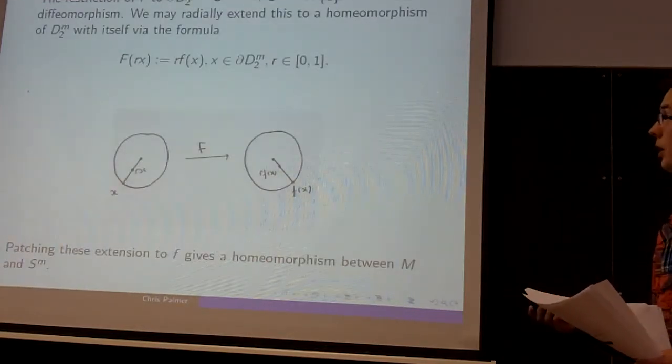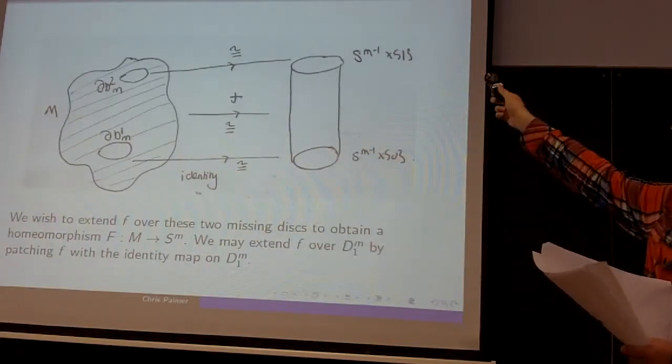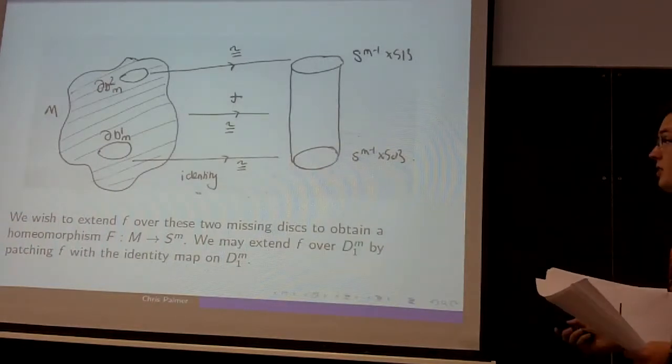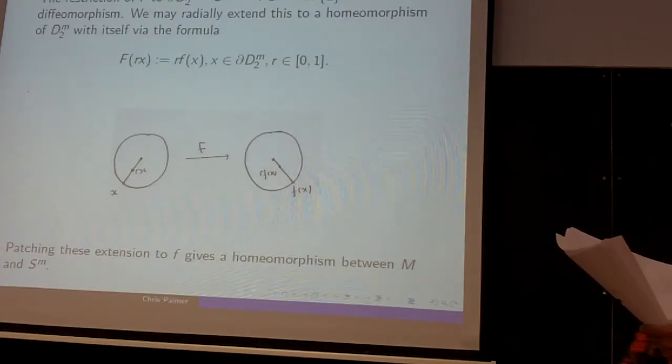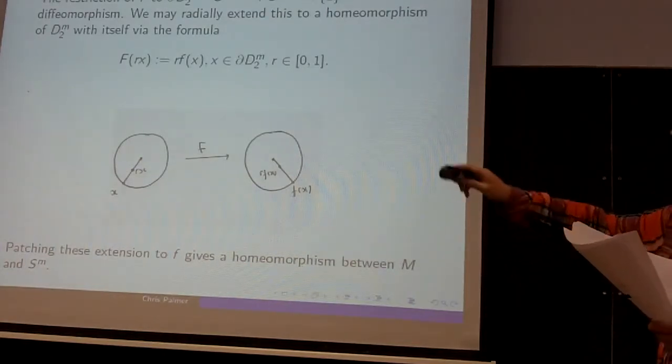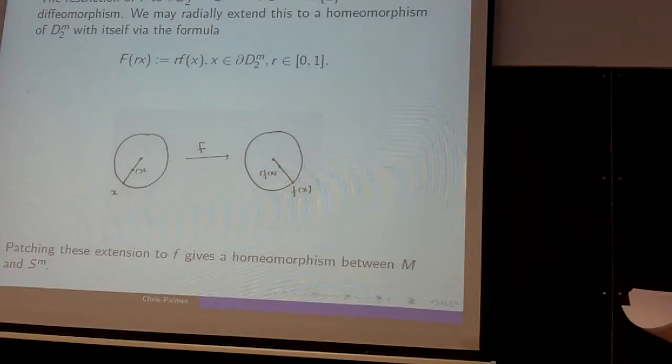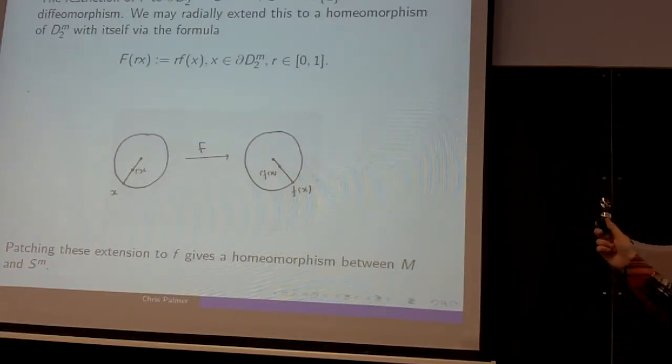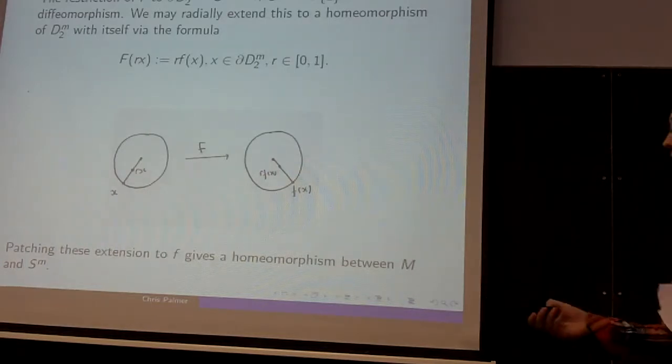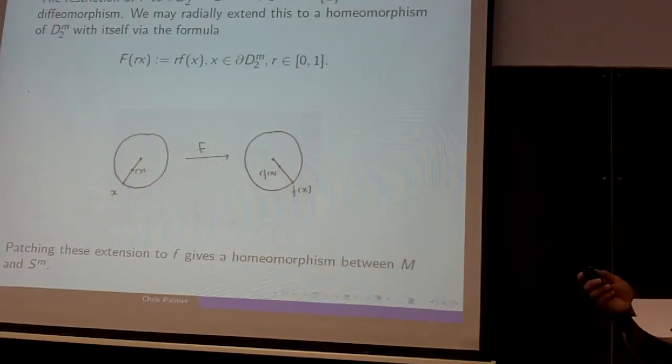For the second one, we have to work a bit harder. When we restrict to the boundary of the second disc, we know that it's a diffeomorphism onto the top part of the boundary, but it's not necessarily the identity. The idea is you can use this radial extension, so we know how it's defined on the boundary. Each point on this closed end disc lies in some unique line connecting the boundary to the centre point. Although you do have to be slightly careful, this resulting map is no longer necessarily smooth at the centre, so it's only a homeomorphism. So we can patch these together and it gives a homeomorphism between M and the M-sphere.